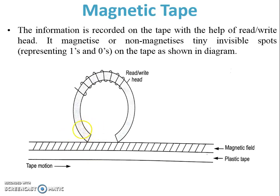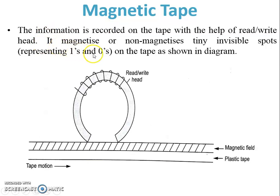This is the structure of magnetic tape. This is the read/write head, and this is the magnetic plastic tape, and a magnetic field will be generated here. This information is recorded on the tape with the help of the read/write head, by the magnetization process. So 1's and 0's are represented on the magnetic tape.